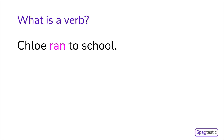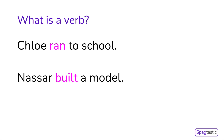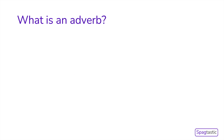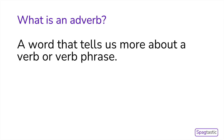In the first sentence, Chloe ran to school — the verb is 'ran'. In the second sentence, NASA built a model — the verb is 'built'.